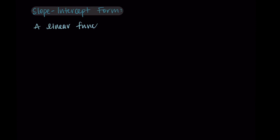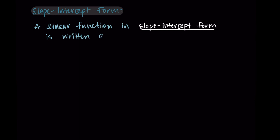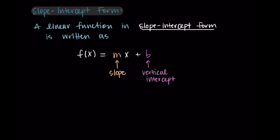Welcome back. In this video we're talking about slope-intercept form of a line. If we have a linear function written in slope-intercept form, it looks like f(x) = mx + b. Here, m represents our slope — it's a constant being multiplied by our input x — and b represents the vertical intercept. This can also be written as y = mx + b.